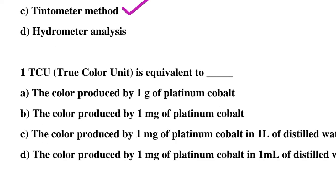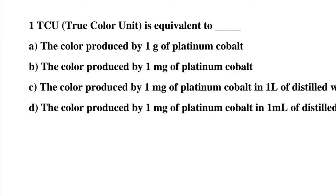Next question: 1 TCU (true color unit) is equivalent to option A: the color produced by 1 gram of platinum cobalt, option B: the color produced by 1 mg of platinum cobalt, option C: the color produced by 1 mg of platinum cobalt in 1 liter of distilled water, option D: the color produced by 1 mg of platinum cobalt in 1 ml of distilled water. The correct answer is option C.